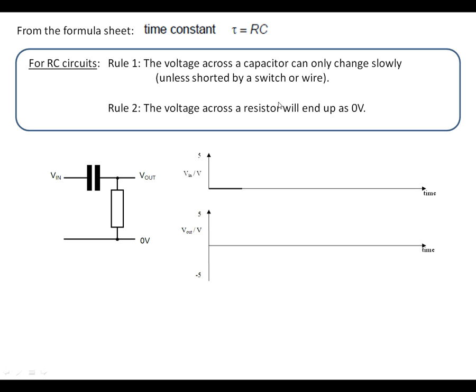Using resistors and capacitors to generate spikes. From the formula sheet we've got a time constant RC. Rule 1, which I use, the voltage across the capacitor will only change slowly. And Rule 2, the voltage across the resistor will always end up at 0 volts.